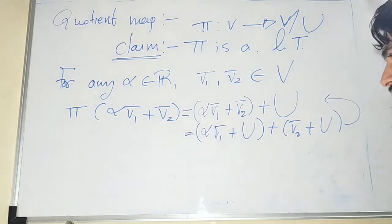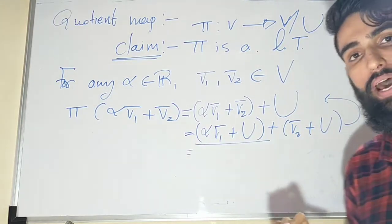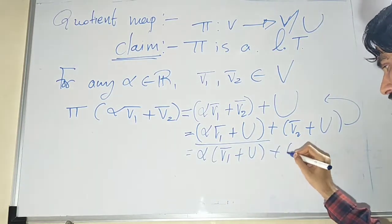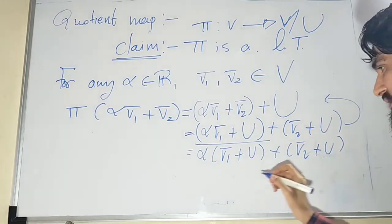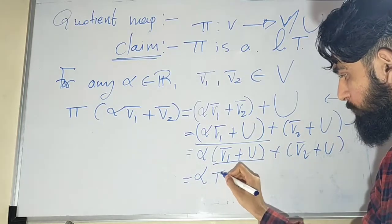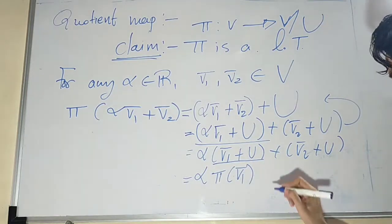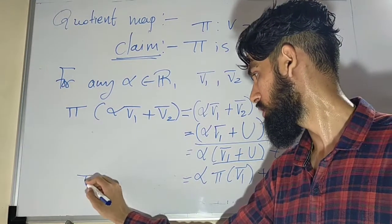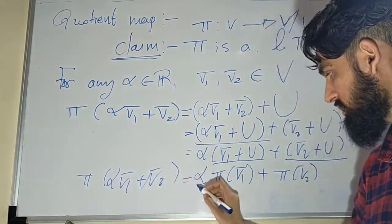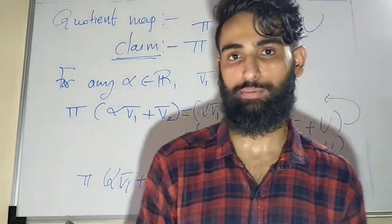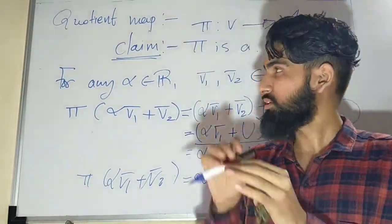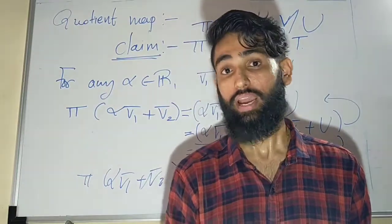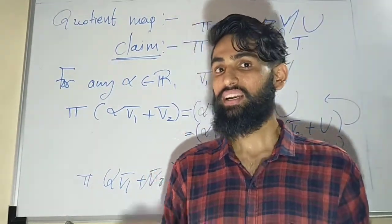From this, using the definition of scalar product on the coset, we can write alpha times v̄₁ plus U, plus v̄₂ plus U. Now observe that v̄₁ plus U is the same as pi of v̄₁, and v̄₂ plus U is the same as pi of v̄₂. Hence we have shown that pi of alpha v̄₁ plus v̄₂ equals alpha pi of v̄₁ plus pi of v̄₂. So pi is a linear transformation. This is about the quotient map.